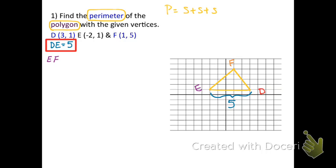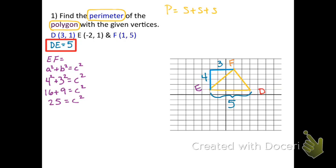The second side EF is at an angle, so we use the Pythagorean theorem: a² + b² = c². We make a right triangle: the vertical leg is 4 units and the horizontal leg is 3 units. So: 4² + 3² = c², which gives 16 + 9 = c², then 25 = c². Taking the square root of both sides, c = 5. So EF = 5 units.